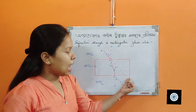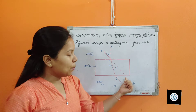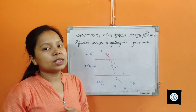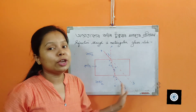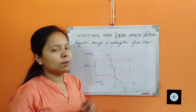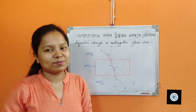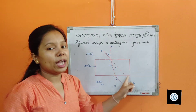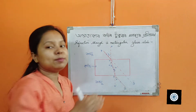The glass slab shifts the ray of light parallelly and it emerges out in the direction of PB. This parallel shift is known as lateral displacement.